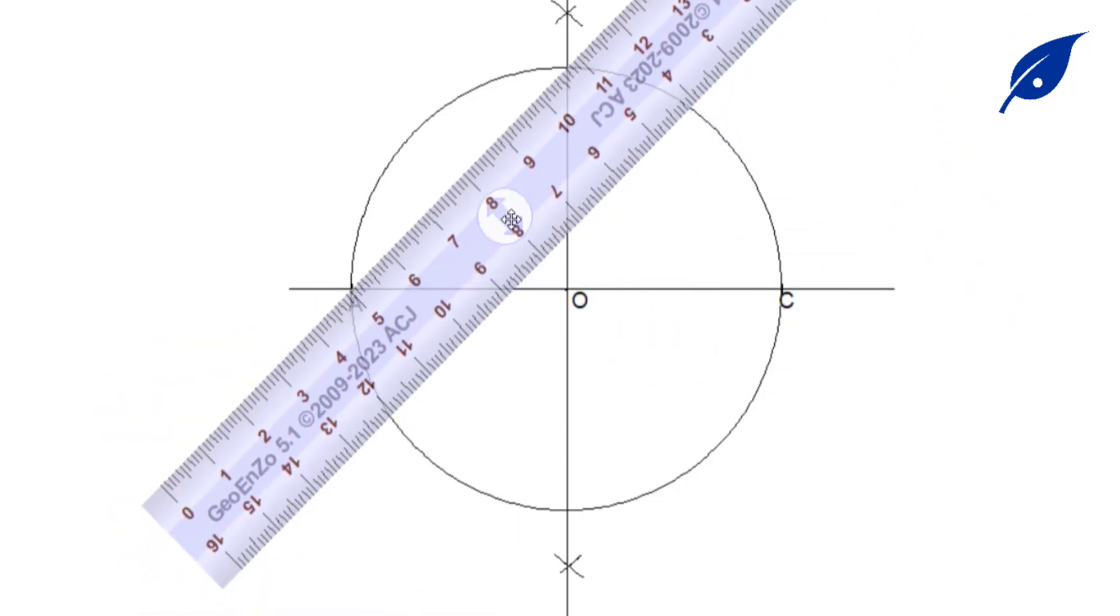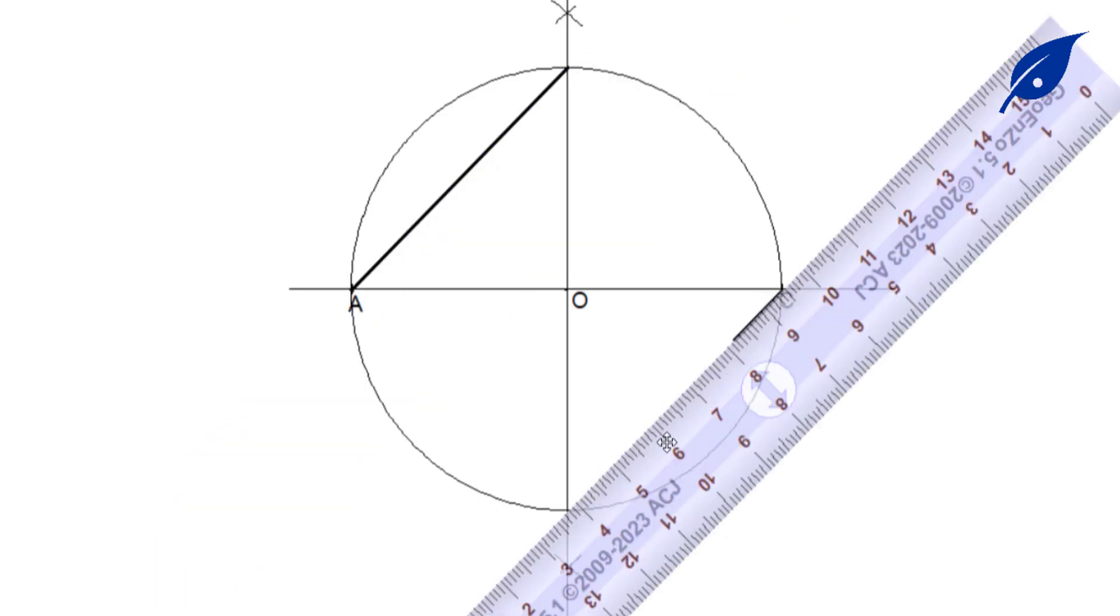The point where the circle touches the vertical line, the perpendicular line at point O, so we have our point B. Then we repeat the same process to get the line CD.